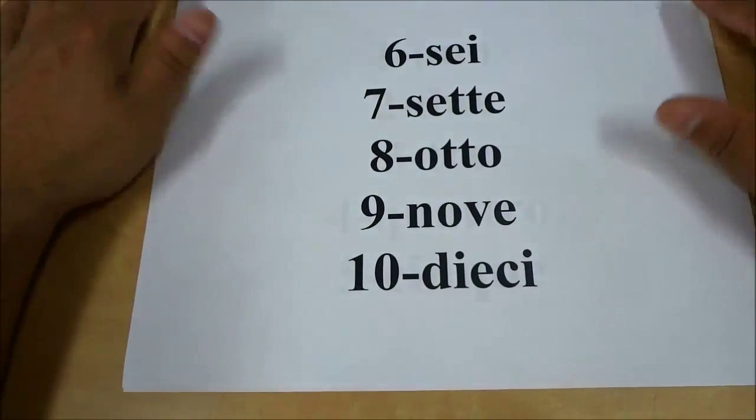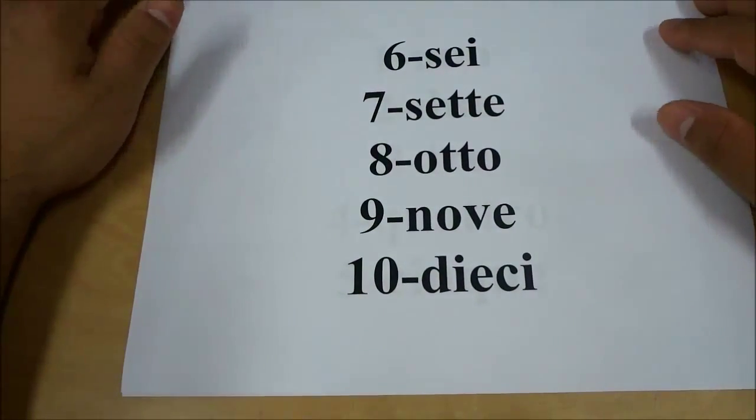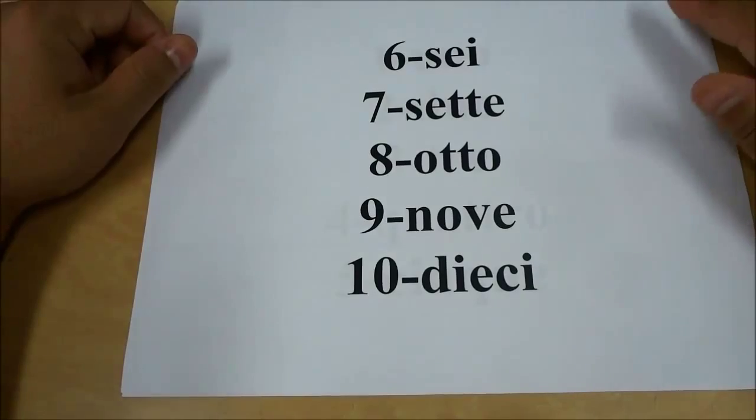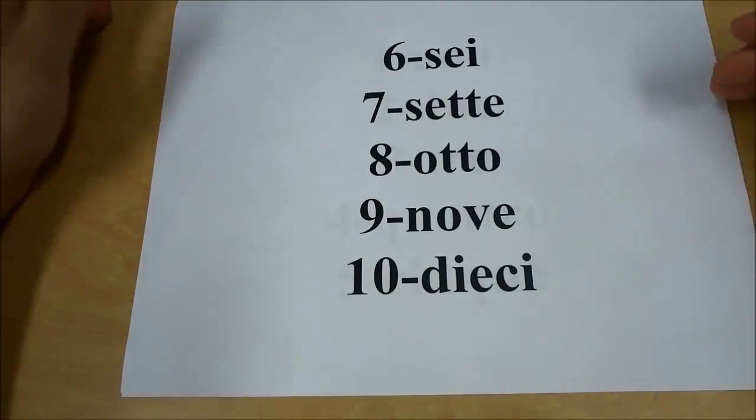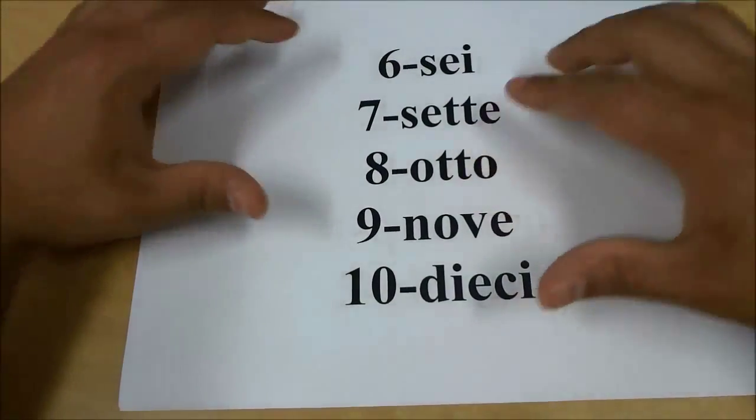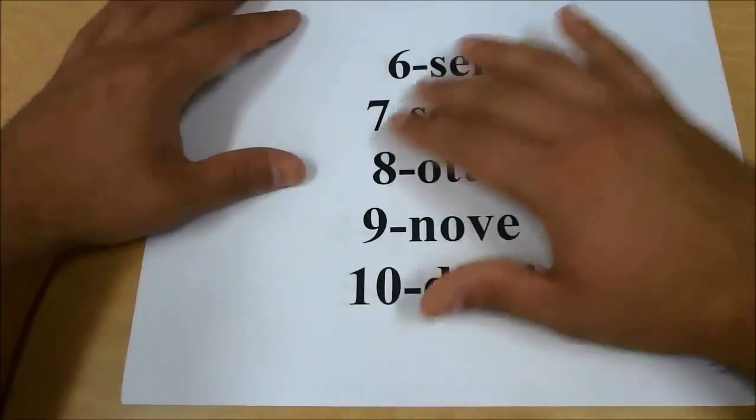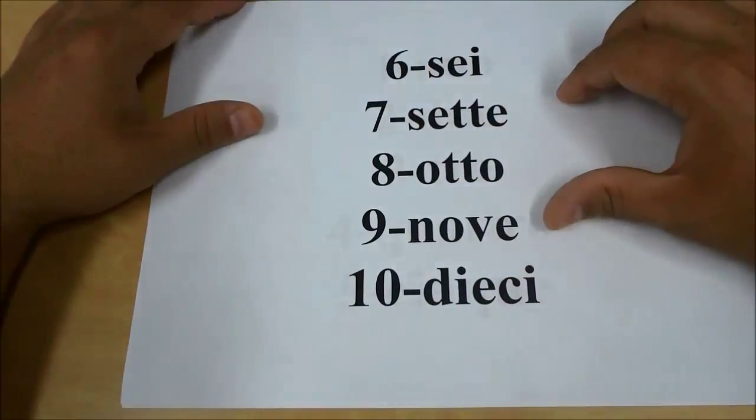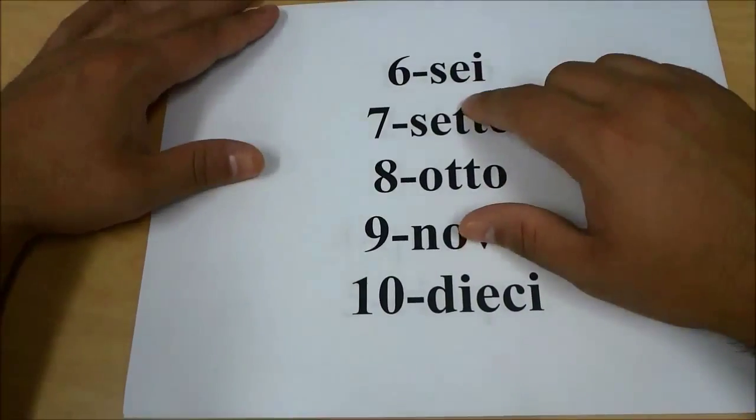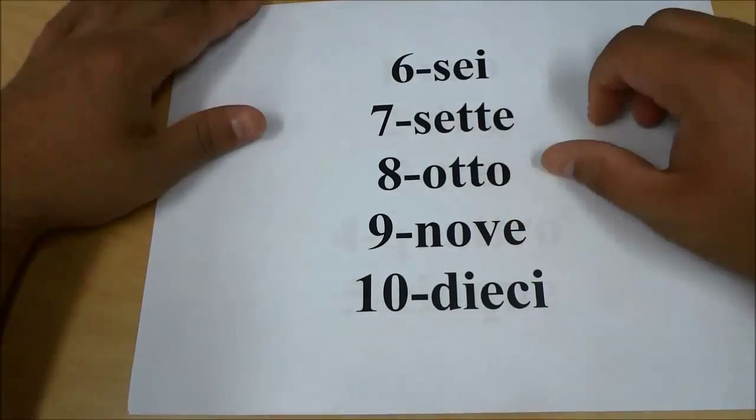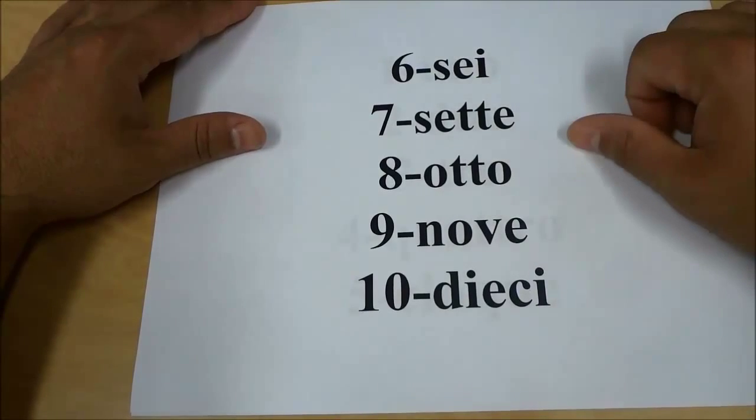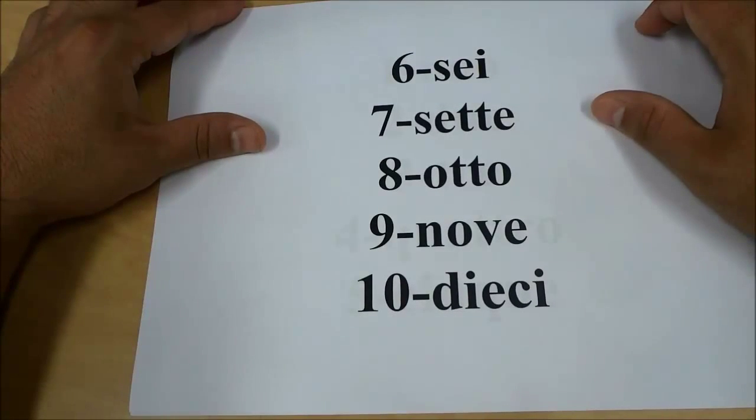And that's basically it. In this video I have told you how to say the numbers 1 through 10 in Italian. I have shown you the writing of the numbers and sort of the spelling of the Italian way of saying the numbers and I have also pronounced each of them multiple times. And that's all I have for you today. Thanks for watching.